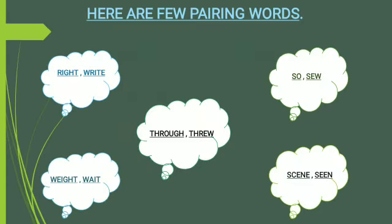Here are a few pairing words. See the first cloud. Right — R-I-G-H-T — means correct, theek. And another word, W-R-I-T-E, write, means to write something — kuch likhna.